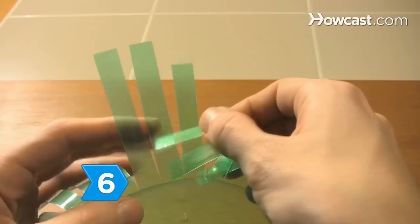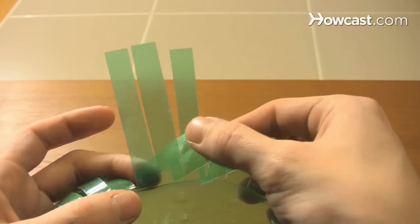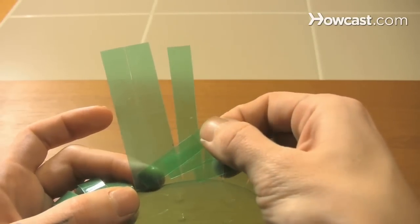Step 6. Bend and crease the third strip the same way as the first one, over one and under two.